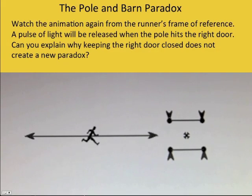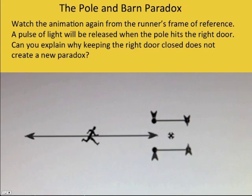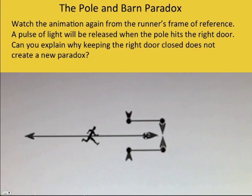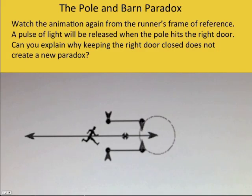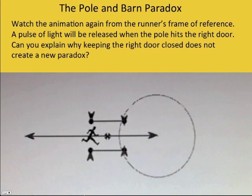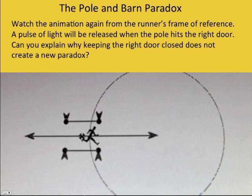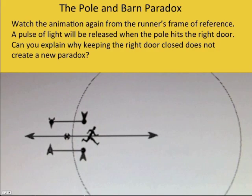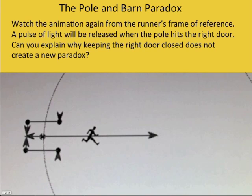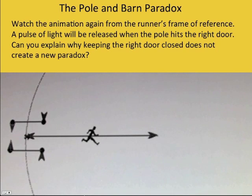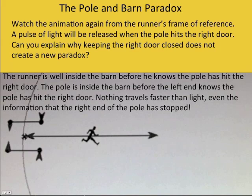And so the runner sees the barn coming at him. The right door is closing, like we saw before. But then the pole hits, and bam, it stops. Or it does it. That pulse of light, nothing travels faster than light, including the information that the pole has hit the door. So the runner doesn't know until the light hits him, or actually that's the earliest. And then now, the left end of the pole is in the barn. It keeps moving at 87% the speed of light until it's found out that the right end hit the door and stopped. And so the pole is just disintegrating on the right door, and the rest of it just keeps moving until the runner is well inside the barn. And so the pole is inside the barn before the left end knows the pole has hit the right door.